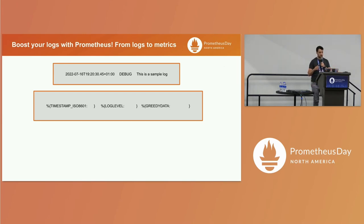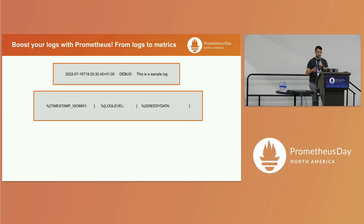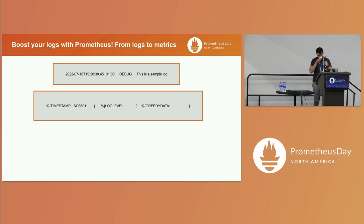Grok uses a useful thing called patterns. A simple log line has a time series or log level and the rest of the information. We can use patterns, which are a kind of regex expression. Regex expressions can be very hard to read when configuring something, so Grok saves this information in some kind of label - for two reasons: the first one is it's easy to read.